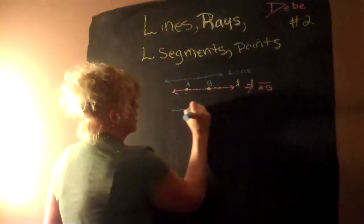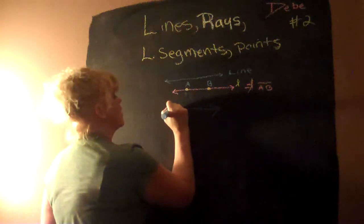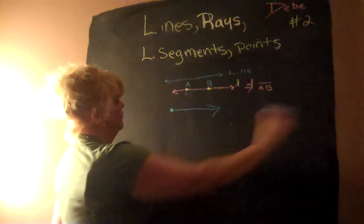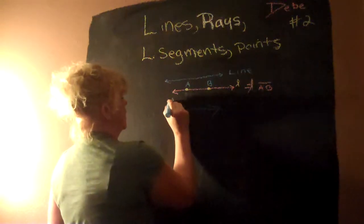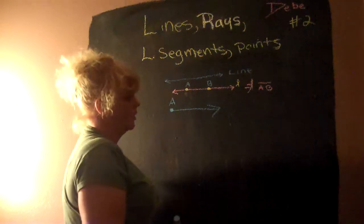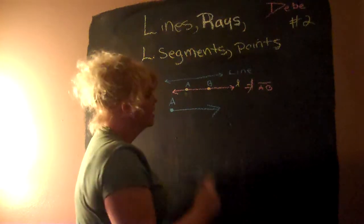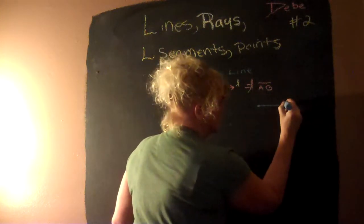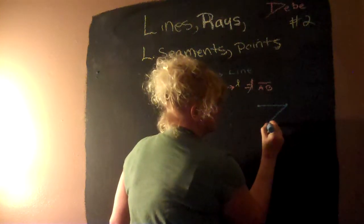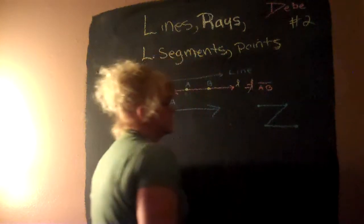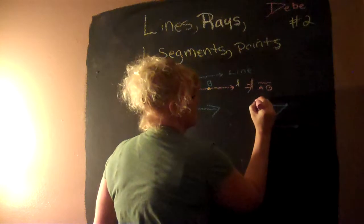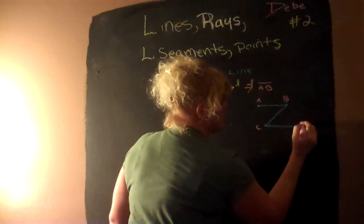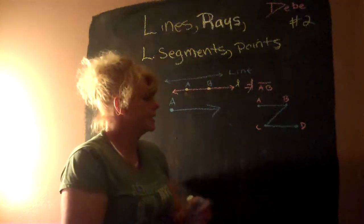We also talked about a ray, which has a point on one end and the other end goes infinite. We're going to put A on this line. Line segments can actually connect to look like this, or any other way you can come up with that they connect. And this is how the labels will work on the points: capital A, B, C, and D.